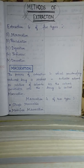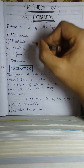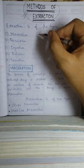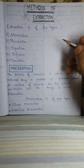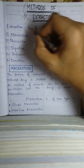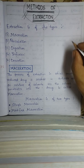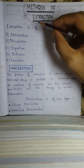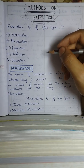There are 5 types of extraction methods. The first is maceration, then percolation, then digestion, then infusion, and then decoction. So these are the 5 methods of extraction of drugs.